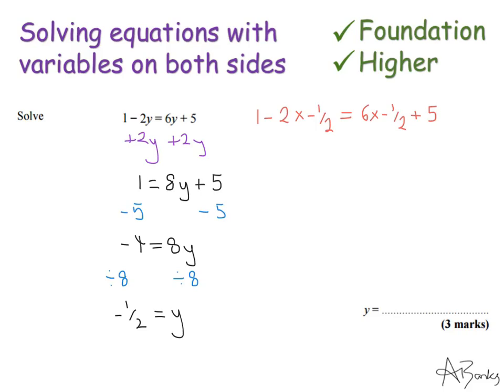So 2 times minus 1 half is minus 1. So this is 1 minus minus 1. And then on my right-hand side, I have 6 lots of minus 1 half. That's minus 3 add 5. So 1 minus minus 1 is 2. And minus 3 add 5 is 2 as well. So I know I've definitely got this question right. I've banked my 3 marks. And my answer is minus 1 half.